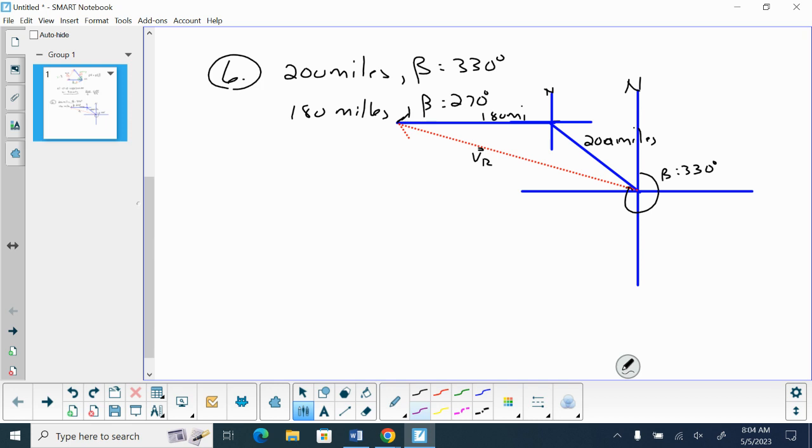Once again, you're given two sides. We want to find the third side. With this, we need to have the included angle. So our included angle, here's our two sides. Here's our included angle to find VR. So we need to now use our geometrical skills to be able to determine what this angle is.